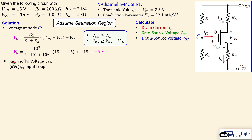Next we apply KVL around the input loop. That loop gives: Vg = vgs + Rs × is + Vss. Here Vss is −15 V and Vdd is +15 V, represented by the two DC voltage source symbols in the circuit.